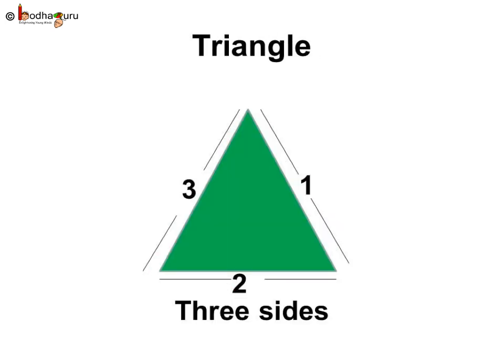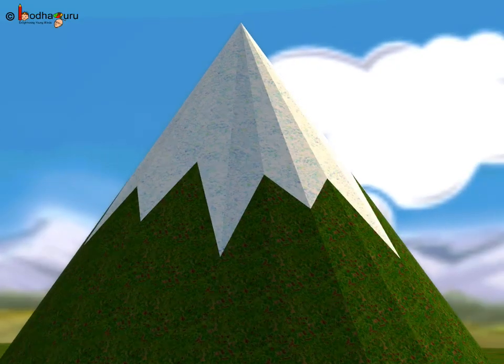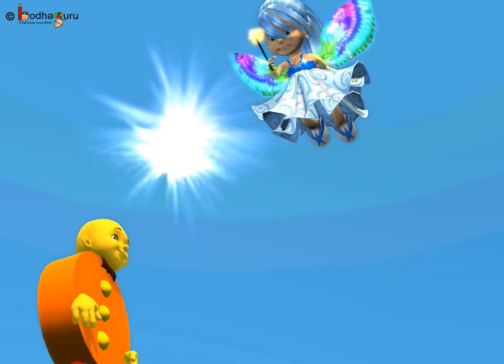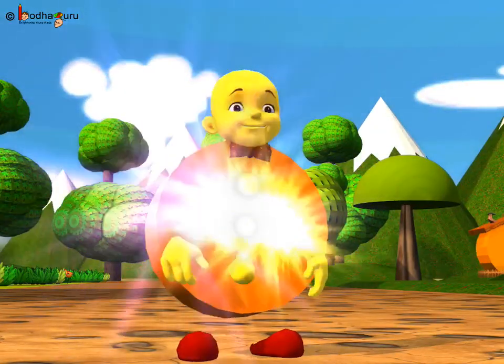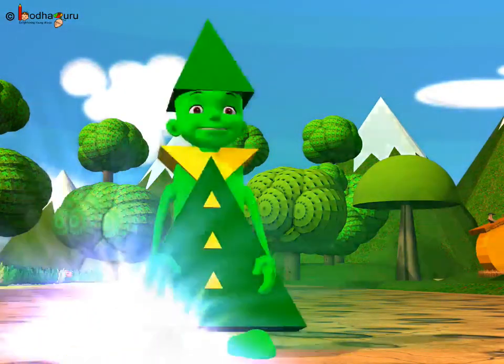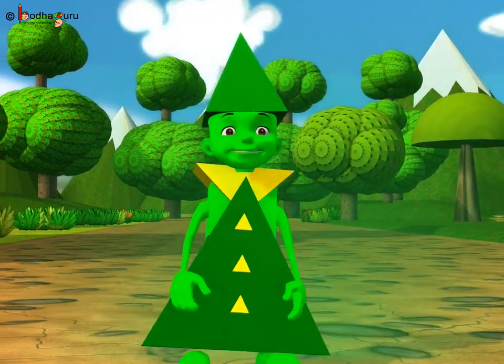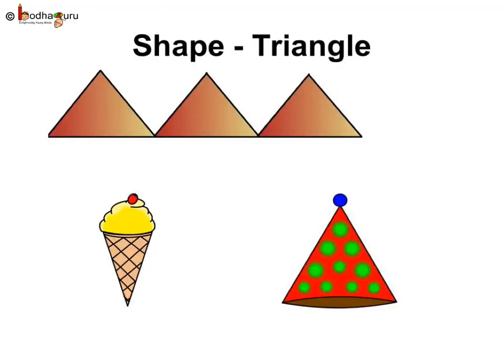So, a triangle is a shape with three sides and the sides need not be of the same length. Like in the story, Squary liked the hill and turned into a shape of a triangle. So, now you know, the hill, hat, ice cream cone are shaped as a triangle.